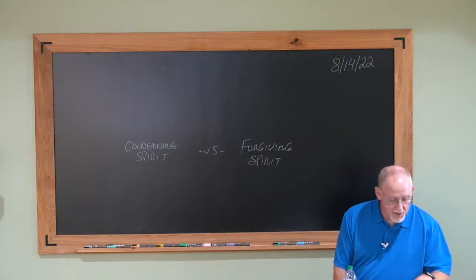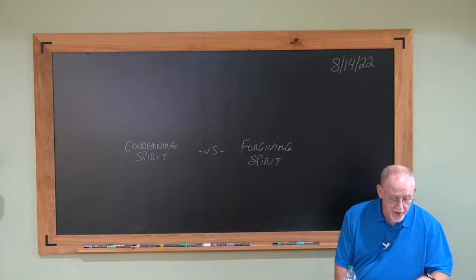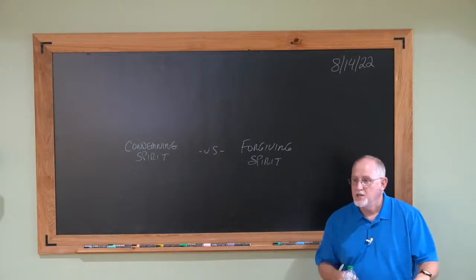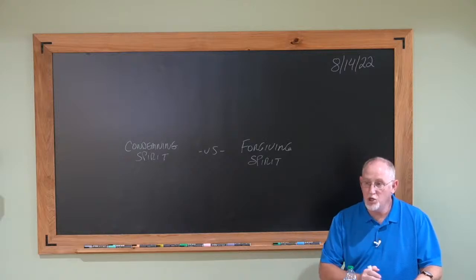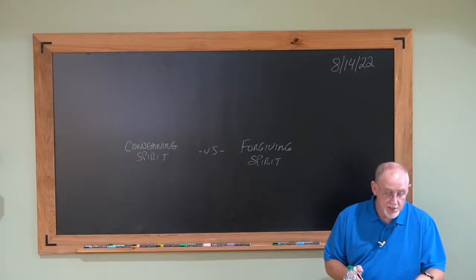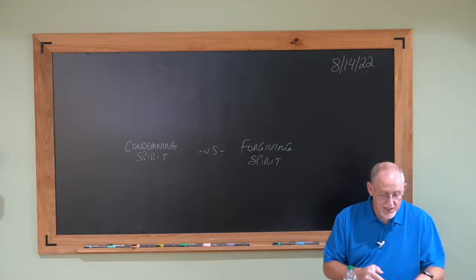He says, verse 37, Luke 6:37, Judge not, you shall not be judged. Condemn not, you shall not be condemned. Forgive and you shall be forgiven. Now notice what He's saying. Don't judge in a judgmental way. Don't nitpick. Don't look for stuff. Then He says, don't condemn. And then He says, forgive.